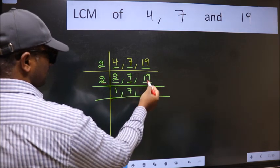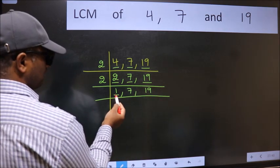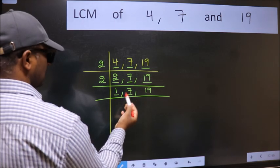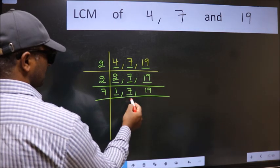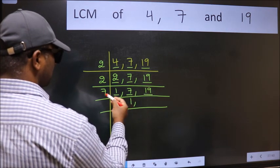Now we got one here so focus on the next number 7. 7 is a prime number so 7 once 7. The other number 19 not divisible by 7 so we write it down as it is.